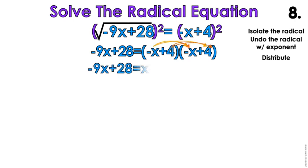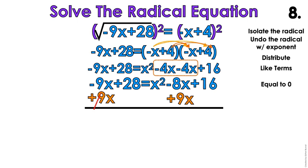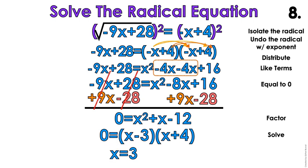So when I distribute everything, I'm gonna get x squared minus 4x minus 4x plus 16. I'm gonna combine my like terms. I'm gonna simplify. And because it is a quadratic, because I have an exponent of 2, I need to make sure that I set the problem equal to 0. That's how you solve a quadratic. So we're gonna get rid of the negative 9x by adding 9x to both sides. We're gonna get rid of the positive 28 by subtracting 28 from both sides. And I'm gonna get 0 equals x squared plus x minus 12. And so I'm gonna factor that. x minus 3, x plus 4, x equals 3, x equals negative 4.